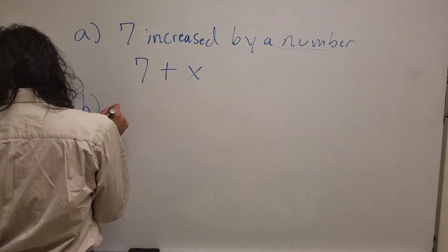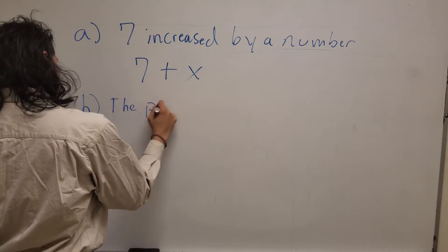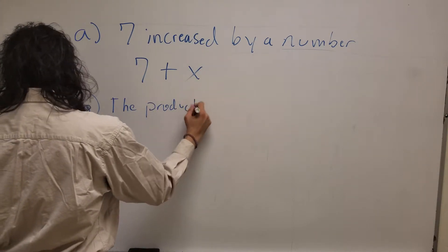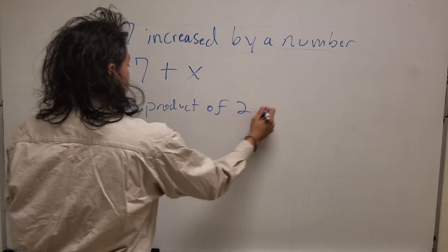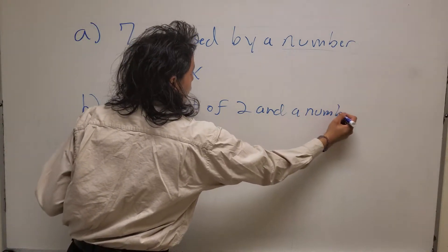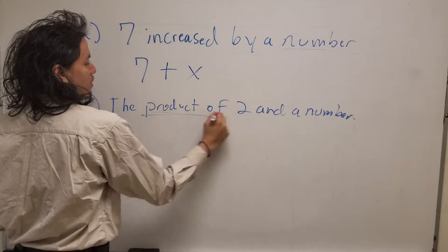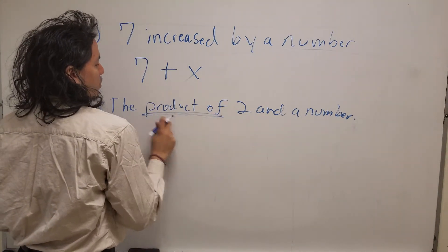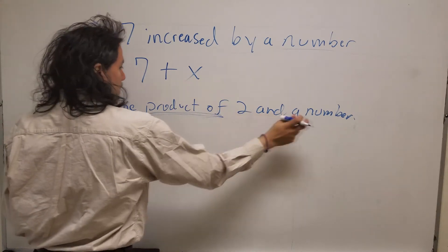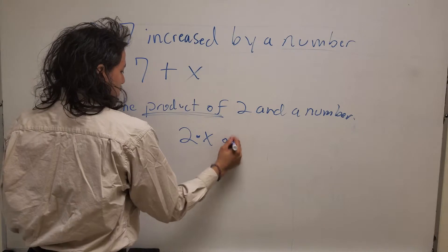Let's try a different one. The product of 2 and a number would be what? We know this part here, all this means multiply. So the product of 2 and a number means 2 times a number, or 2x.